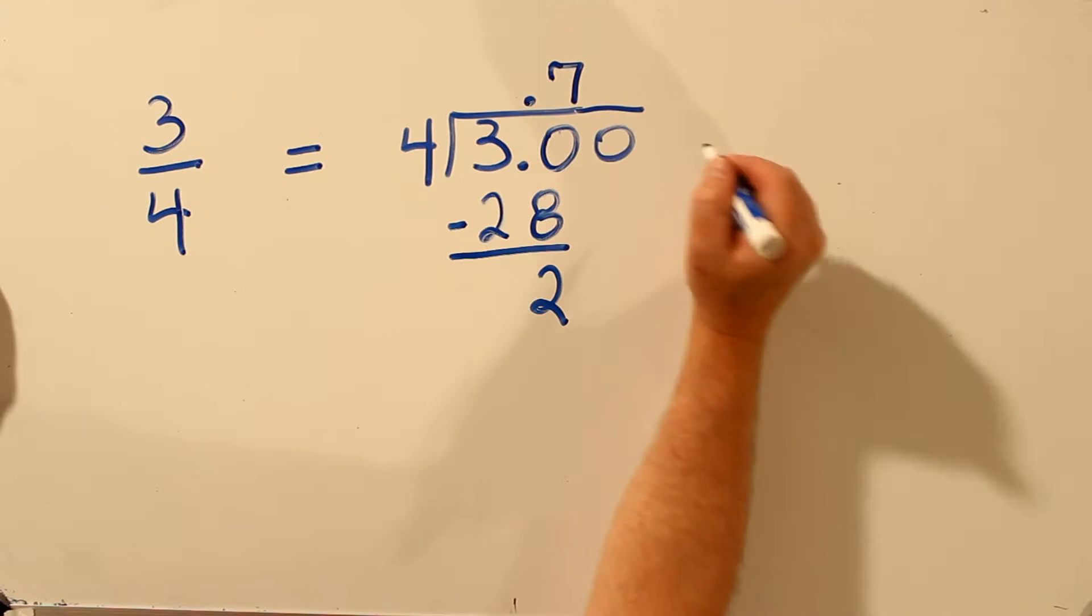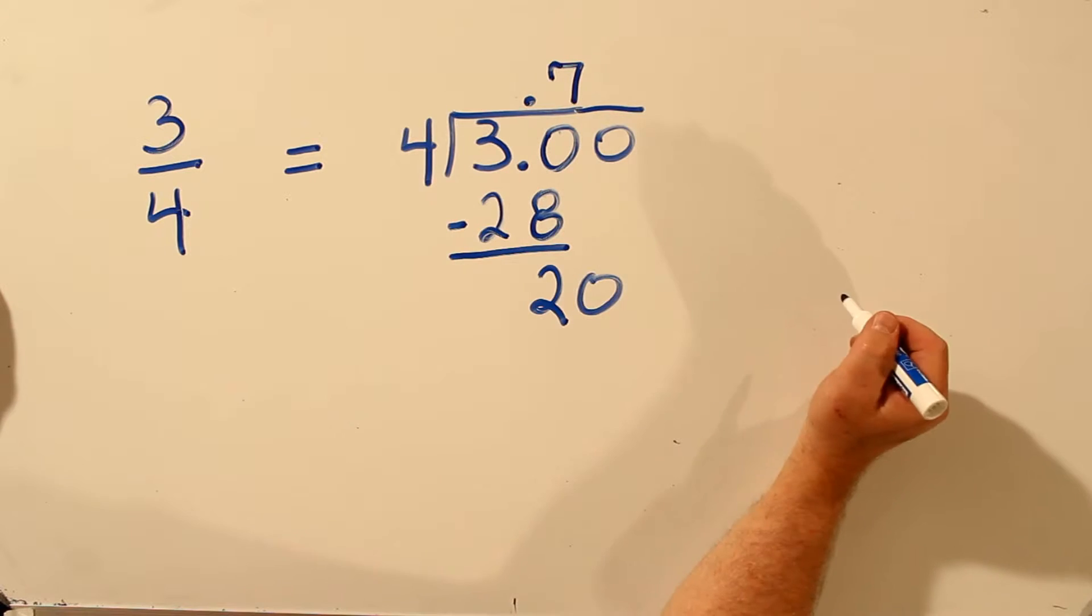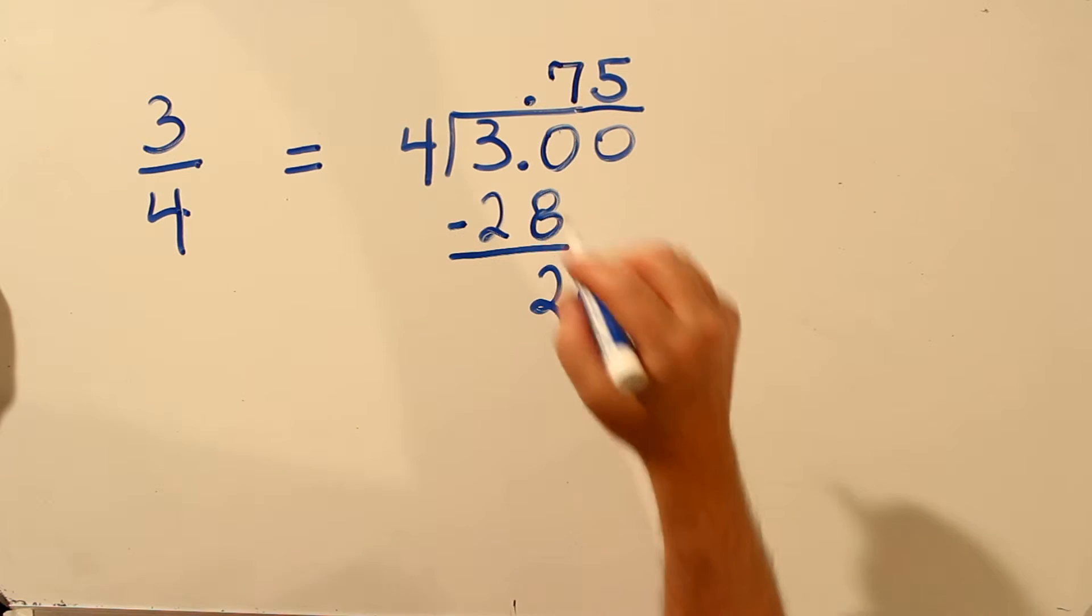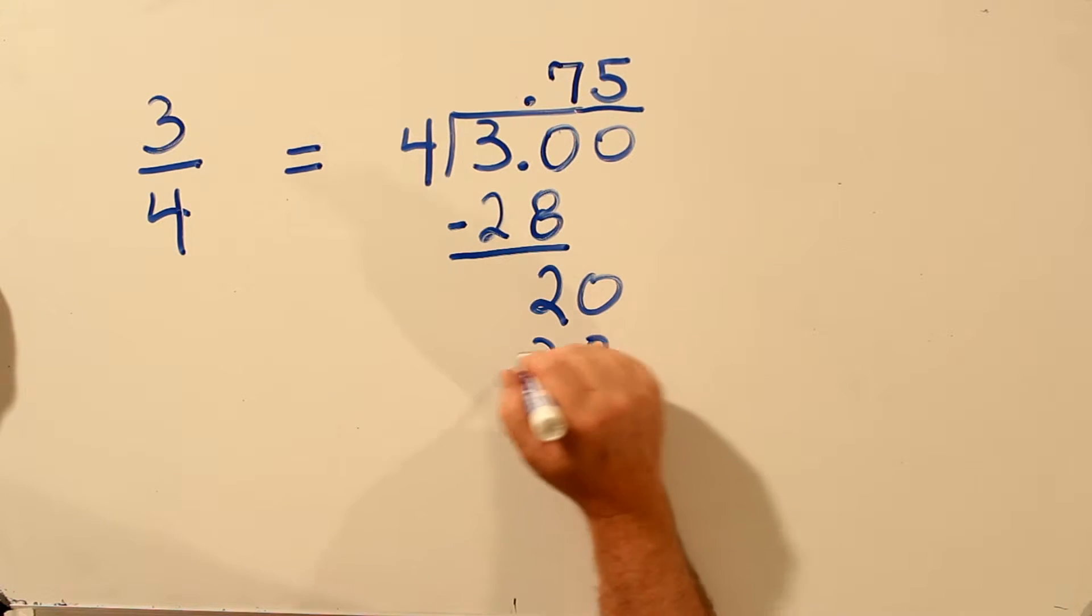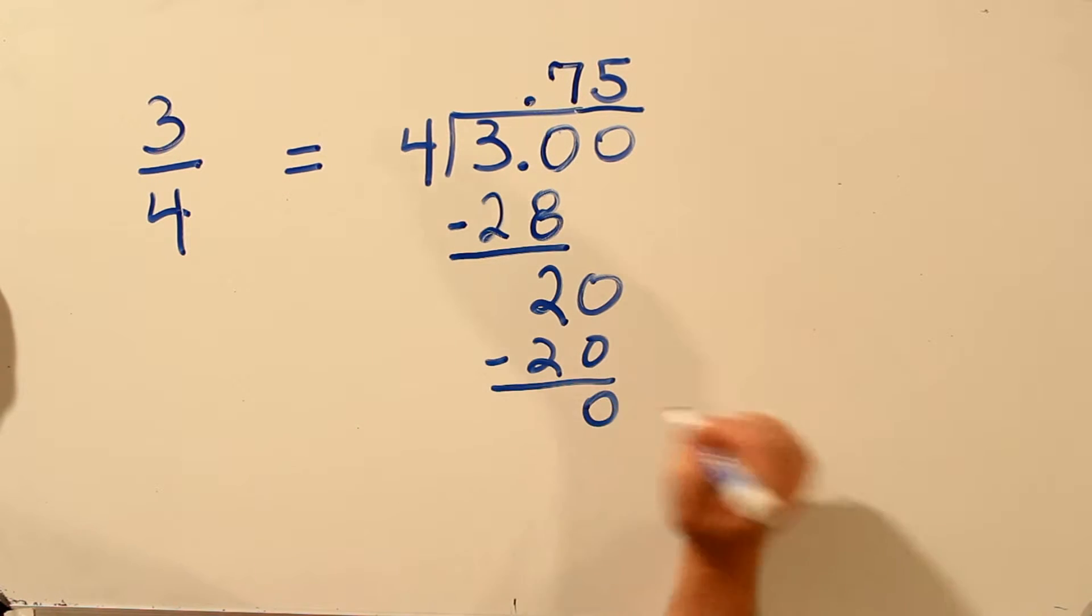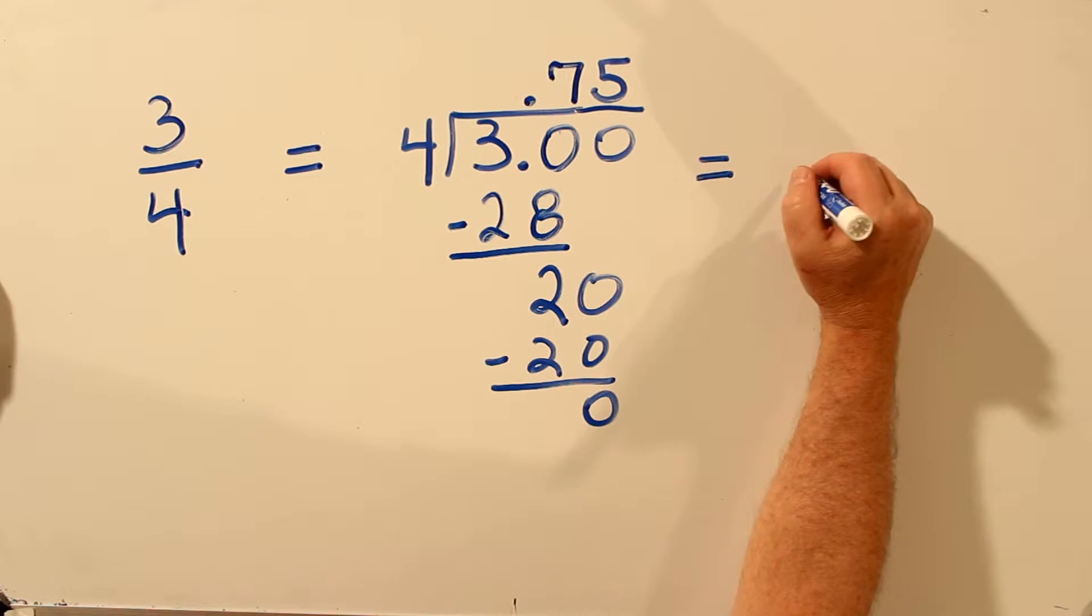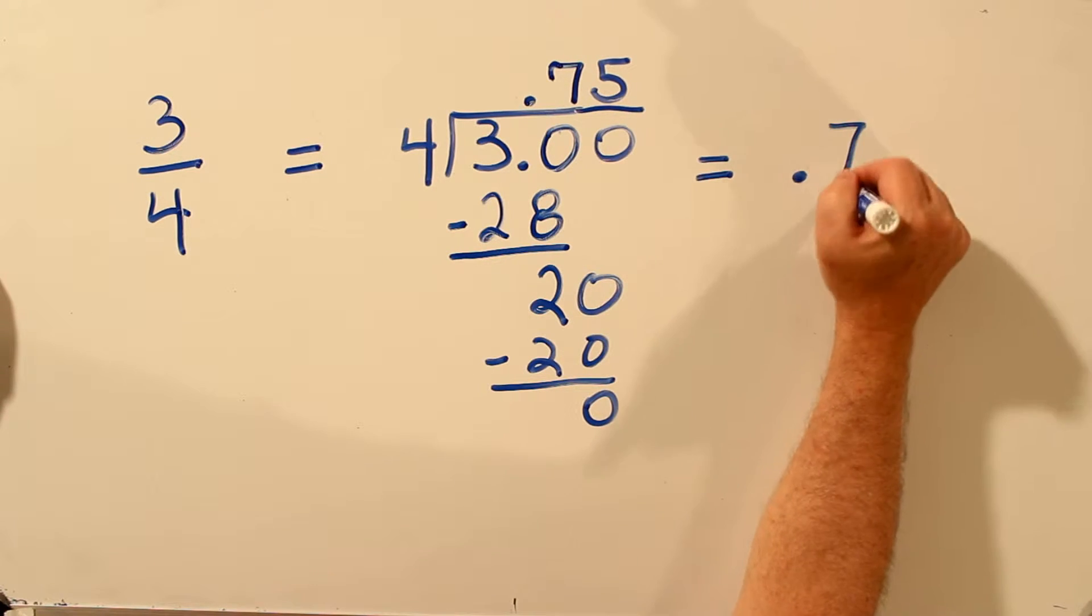Let's bring down another 0. 4 goes into 20, 5 times. 5 times 4 is 20, and the remainder is 0. So we're done. So 3 fourths, written as a decimal, is .75.